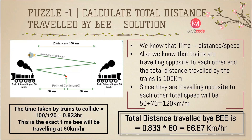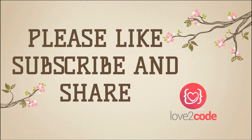Let's see the solution. We know that time equals distance divided by speed. The trains are traveling opposite to each other and the total distance between them is 100 km. Since they are traveling towards each other, their combined speed is 50 plus 70, which equals 120 km per hour. The time taken by the trains to collide is 100 divided by 120, which equals 0.833 hours. This is the exact time the bee will be traveling at 80 km per hour. Total distance traveled by the bee equals 0.833 multiplied by 80, which equals 66.67 km. Thanks for watching this video.